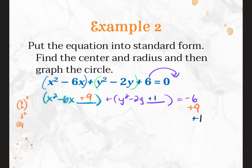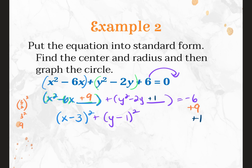Now we have perfect square trinomials we can factor. The shortcut: square root the first term, square root the last term, take the sign from the middle, put it in parentheses, and square it. Repeat for Y. Then negative 6 plus 9 is 3, plus 1 is 4, giving us the right-hand side equal to 4.